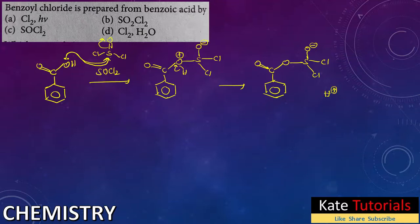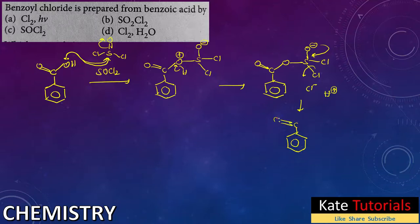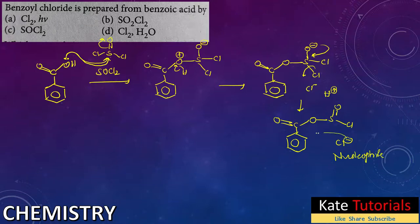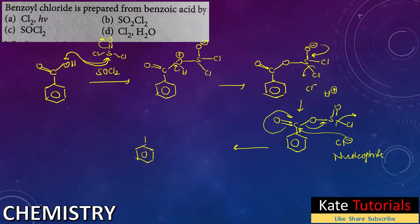As soon as this intermediate forms, the chlorine is generated as Cl⁻. The next step: we have O-S(=O)-Cl and the Cl⁻ formed acts as a nucleophile — electron-rich species. It attacks the electrophilic carbonyl carbon, electron density shifts, the O-S bond breaks, and Cl replaces it. So the final product has the benzene ring with C(=O)Cl — benzoyl chloride.